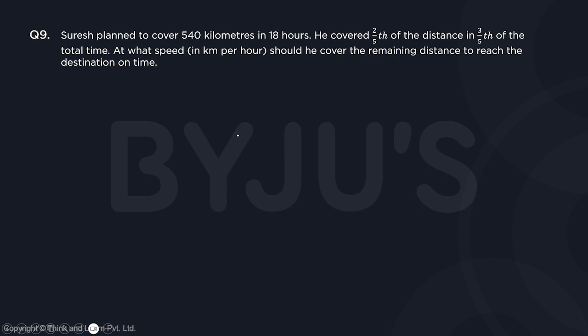Since Suresh is covering the entire distance in more than one way — a certain distance taking some time and another distance taking some time — we can consider this a case of average where two scenarios come together. Whenever we are talking about average speed and using allegation, we take the first speed, second speed, and their average as S-bar, and the frequencies are the ratio of the times they take.